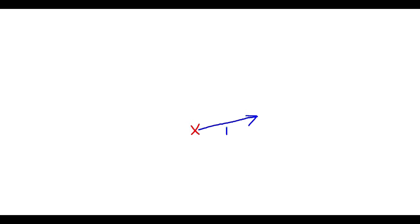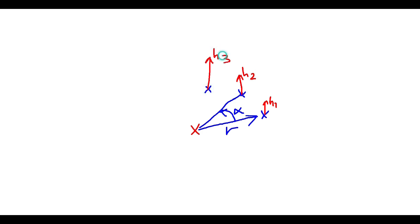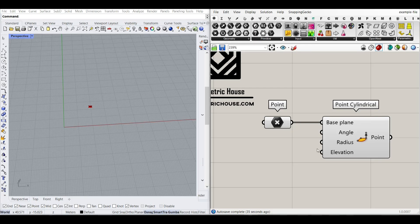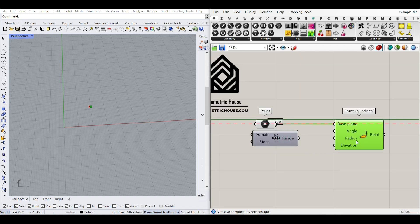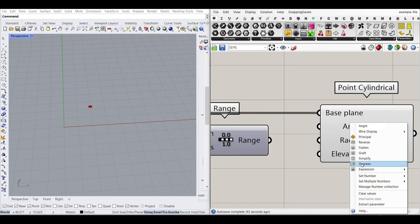Because we want to make this cylindrical, we need to define a radius and also an angle. There is also a height for each of these — H1, H2, and so on — which is also controllable in the Point Cylindrical component. To set up the angle, I'm going to make a range of numbers. Because it's in degrees, I'm going to right-click on the angle input and set it to degrees.